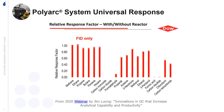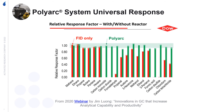The relative response factor for an FID is shown in this graph. The response of the FID is dependent on different functional groups that are present. In general, the FID does perform well with straight chain alkanes. In comparison, the PolyArch has relative response factors of about 1. By converting all of the compounds to methane, we remove the variability the FID has for different analytes.